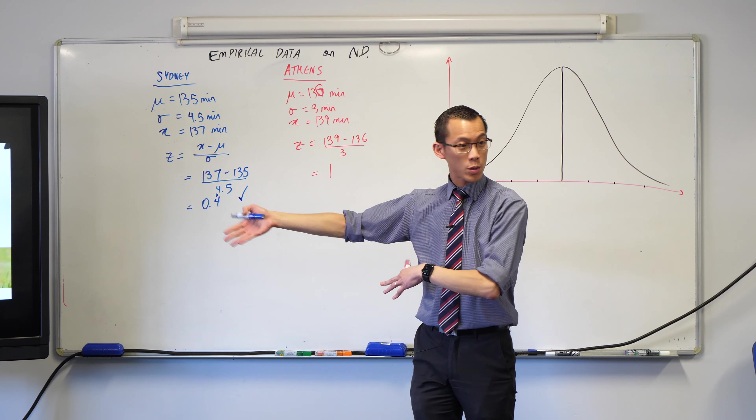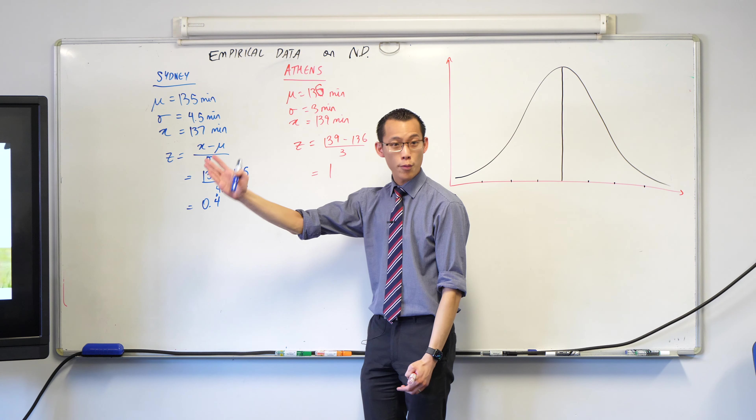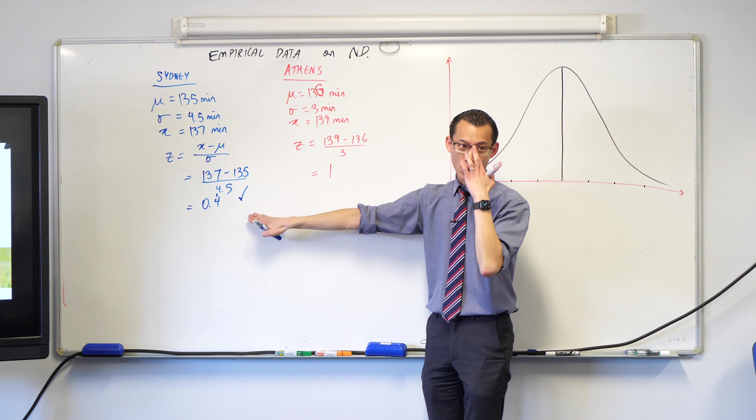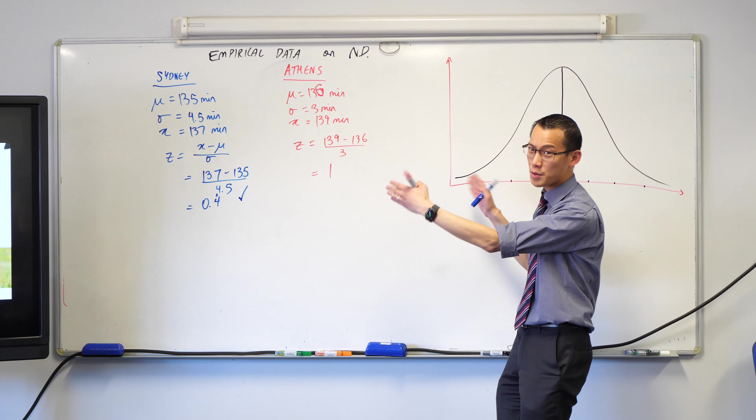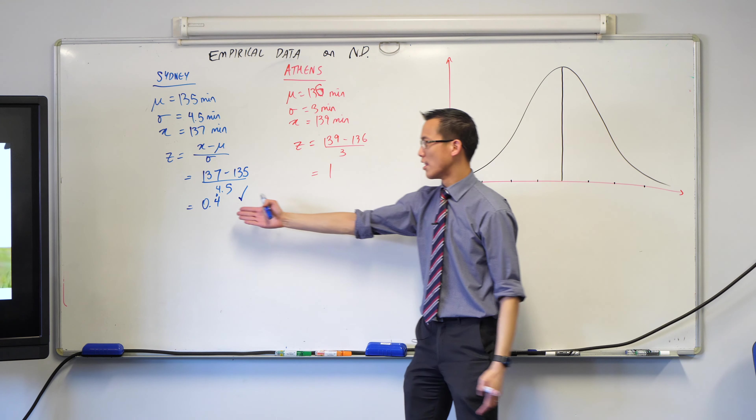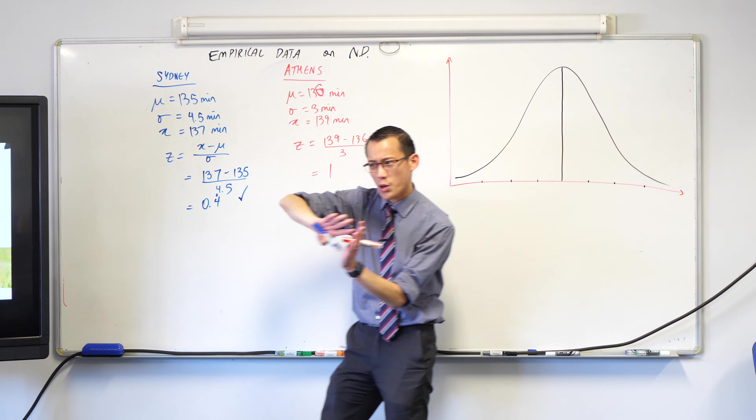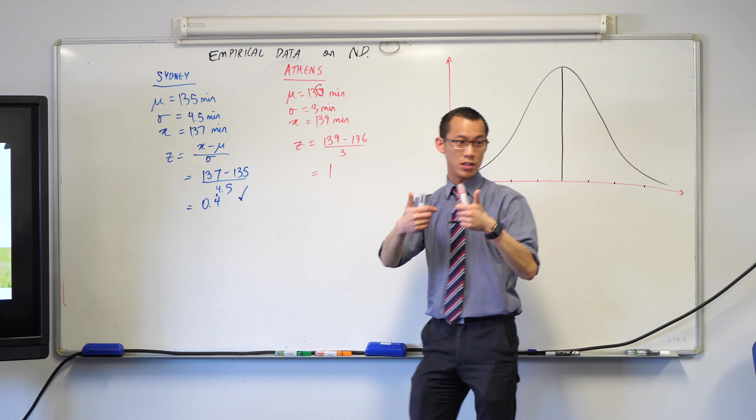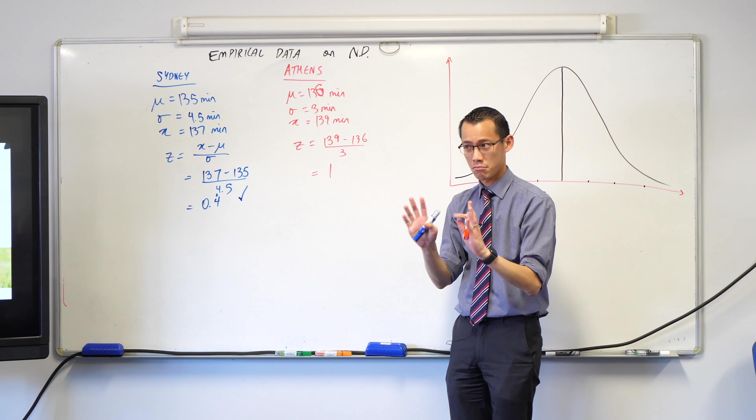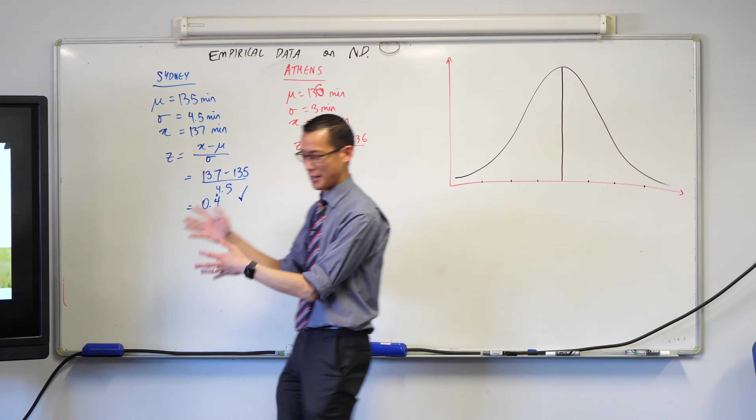Which was the better performance? Sydney is the better performance. The reasoning is that his Z-score for Sydney is lower. Because with times, lower is better. If he had a Z-score of negative 2, he'd be way down that end with a much smaller time than everyone else, which is fast. It's not just about number crunching – it's about interpretation.